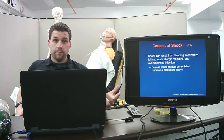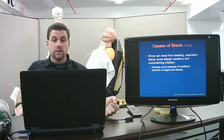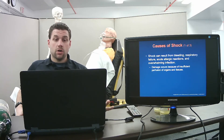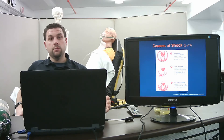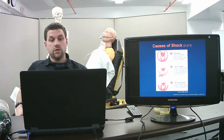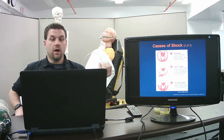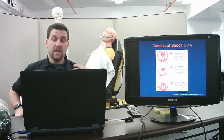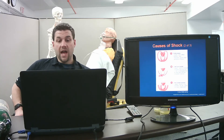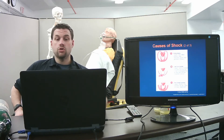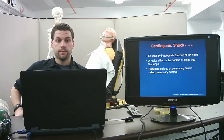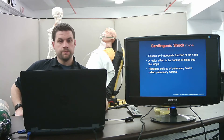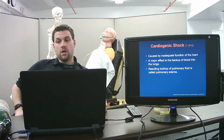Shock can result from bleeding, respiratory failure, acute allergic reactions, and overwhelming infection. The causes fall into three categories from the perfusion triangle: the pump fails, there's low fluid volume, or there's vessel dysfunction — such as infection, drug overdose, spinal cord injury, or anaphylaxis. You'll find these in Table 12-1 in your book.